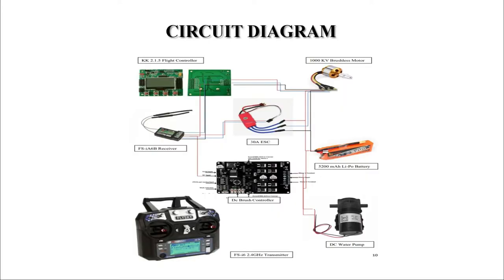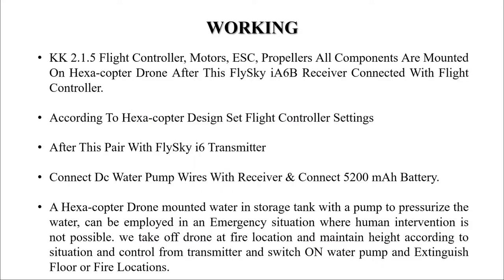Next is the circuit diagram. This is our project's main circuit diagram. All six brushless motors are connected to the flight controller, and the ESCs are also connected to the flight controller. The Flysky i6 receiver and 5200 mAh LiPo battery are connected to the main circuit and operated through the Flysky transmitter.